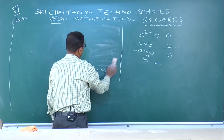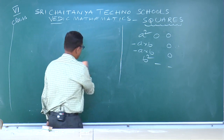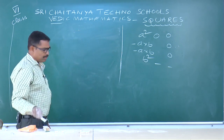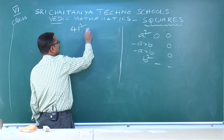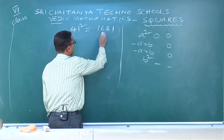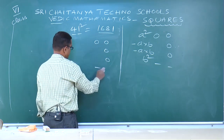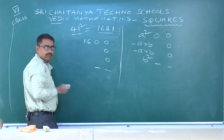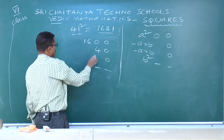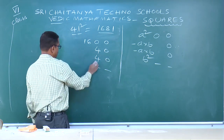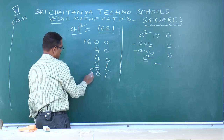Next: 41² = 1681. Here a=4, b=1. a²=4²=16, a×b=4×1=4, a×b=4 again, b²=1²=01. Add: 1; 8; 6; 1 — answer is 1681.